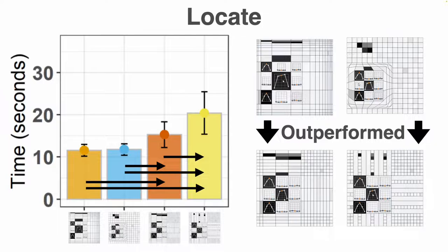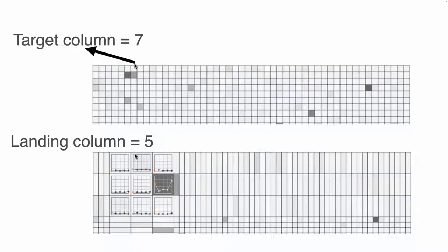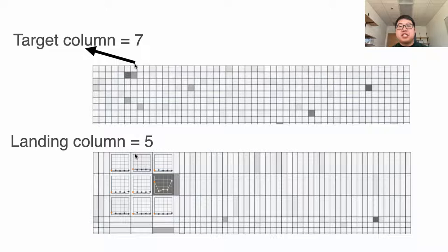In a post-hoc analysis, we found one potential reason for the bad performance in table lenses. Like demonstrated in this figure, the distortions in table lenses do not allow the users to precisely land on the target column. Please see our paper for more detailed analysis and discussion.